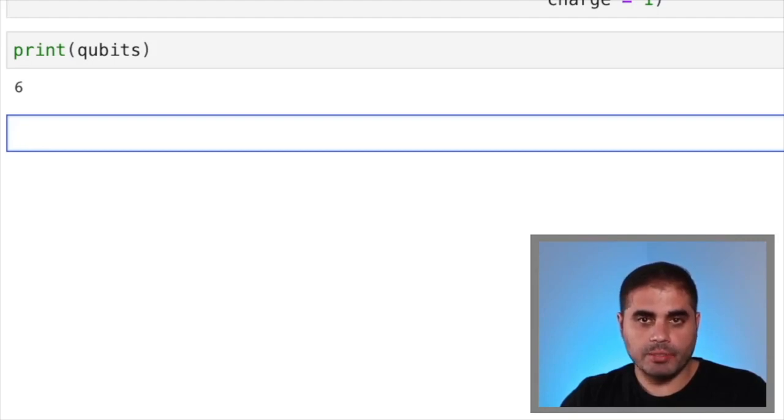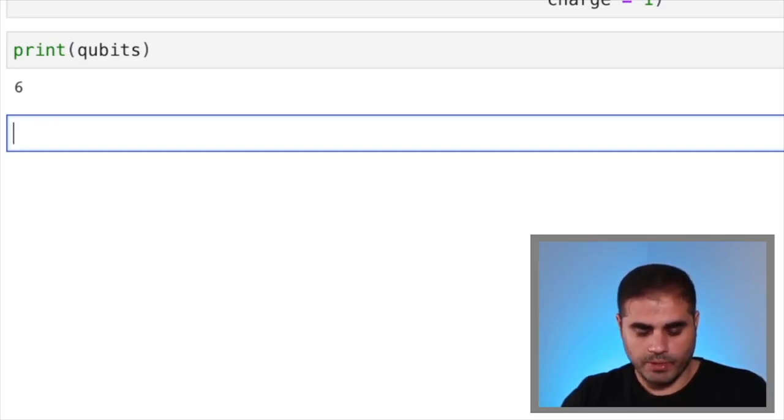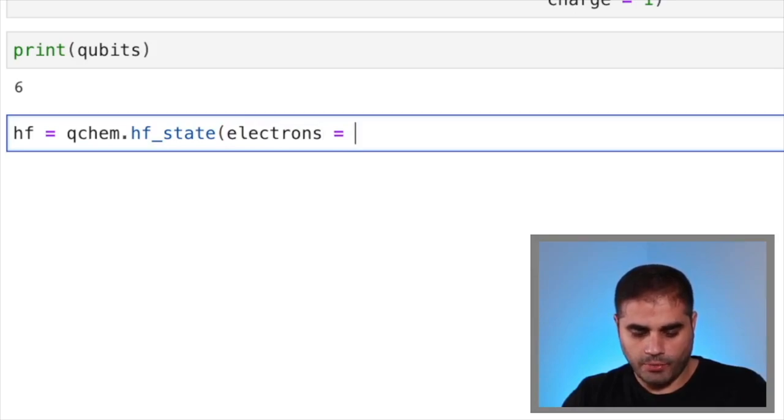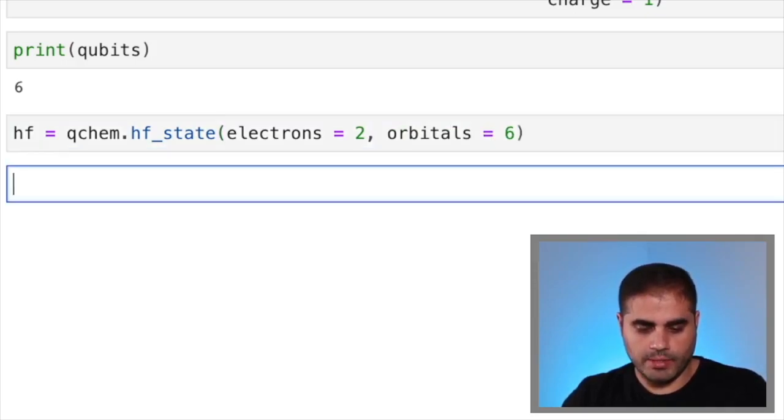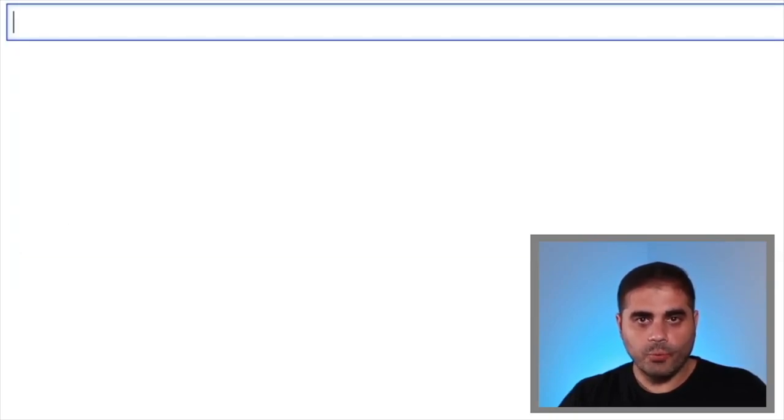Now we can define an approximate ground state known as the Hartree-Fock state. This will be a first approximation to our ground state, but it's not really the ground state. So we do this by defining HF is equal to qchem.HF_state for Hartree-Fock state. And now we know that we have two electrons because it was a positive ion of H3. And we know that we need six qubits. So let's do orbitals equals to six. Press enter. And if we print what HF is, it is this state in the Jordan-Wigner representation. To learn more about the Jordan-Wigner representation, please watch our video on Introduction to Quantum Chemistry.